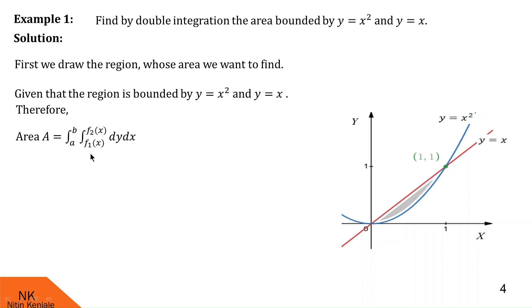Now let us find these limits using the arrow technique discussed in my earlier videos — you can find the link in the description box. To find the limits of y, we throw arrows parallel to the y-axis from bottom to top and check whether these arrows enter and leave the region by crossing only one curve each time. They cross y = x² to enter the region, so x² is the lower limit of the inside integral. They cross y = x to leave the region, so x is the upper limit of the inside integral.